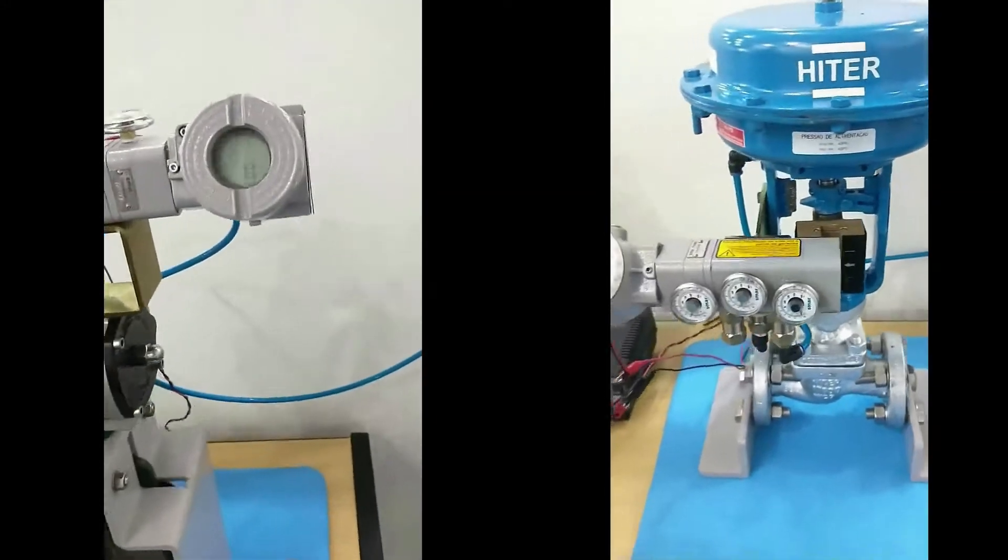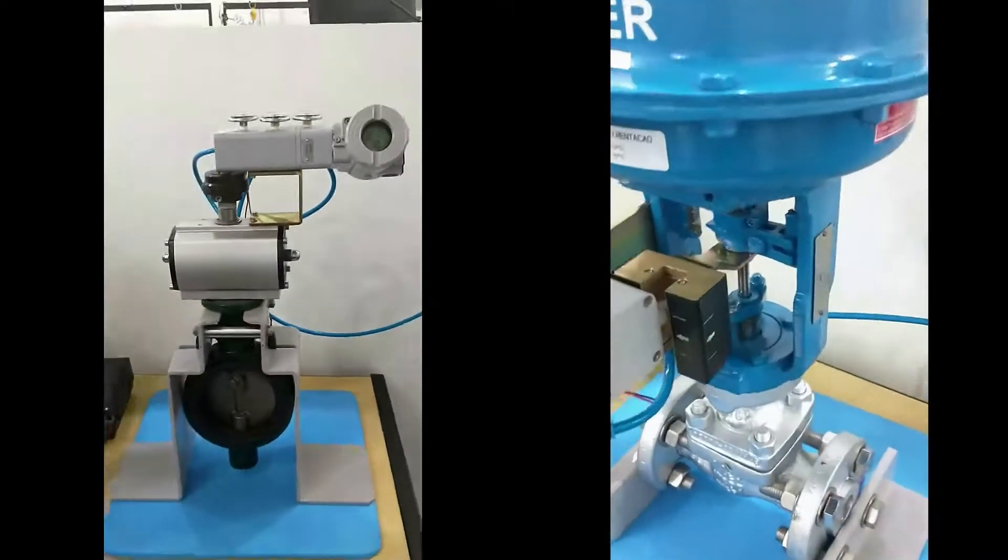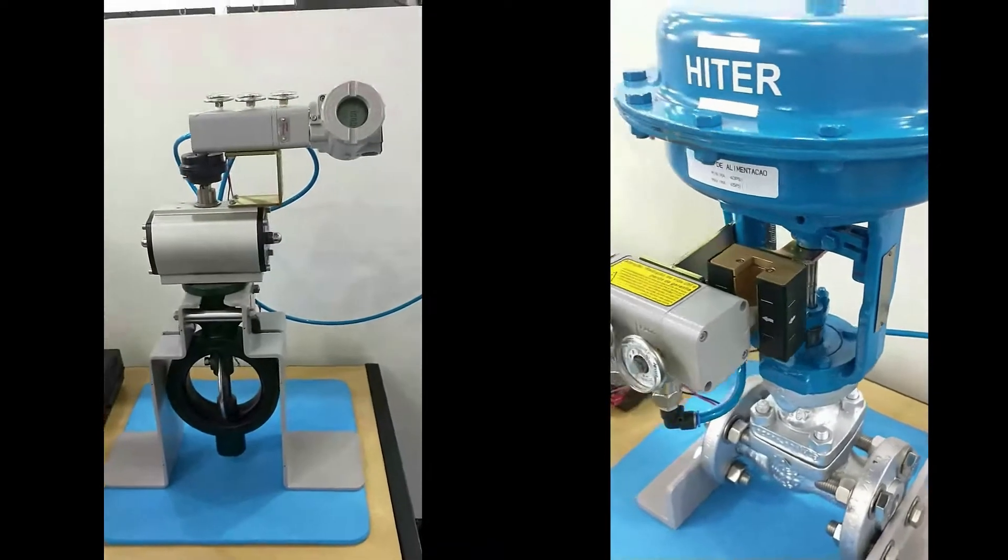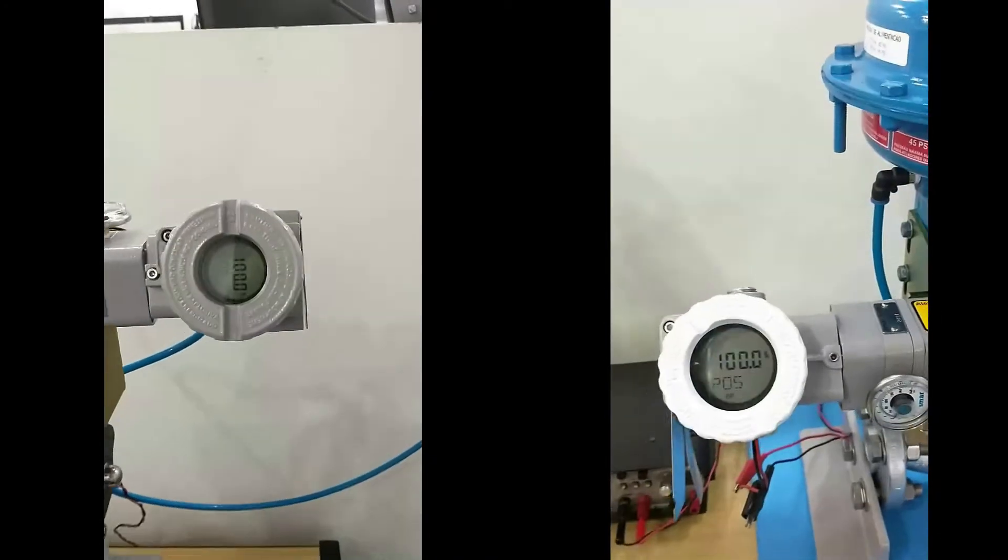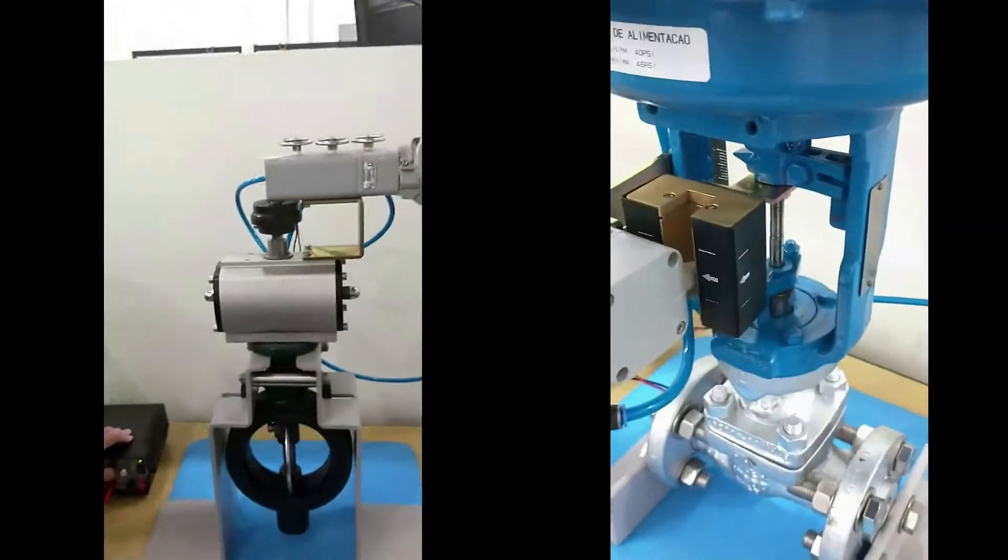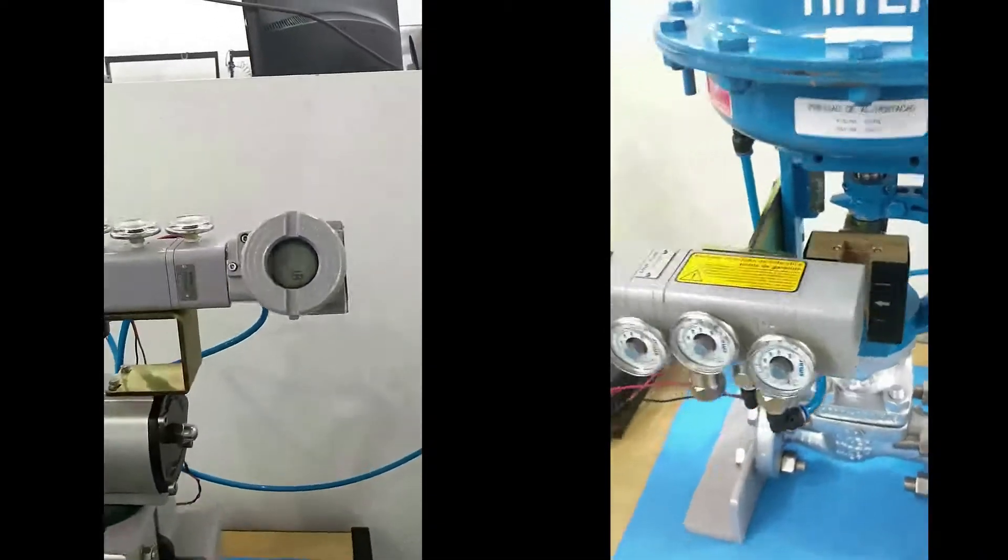NOSMAR's line of intelligent positioners serves linear and rotary applications. One of the technical differentials is its position sensor, by hall effect, without physical contact that provides high performance and safe operation and free from mechanical attrition.